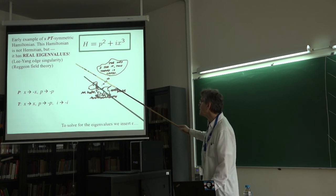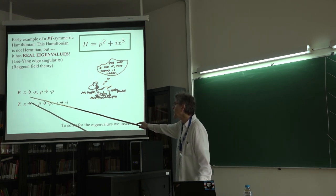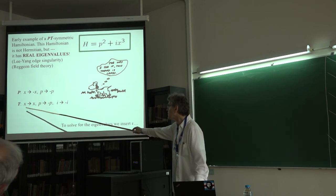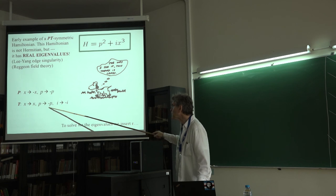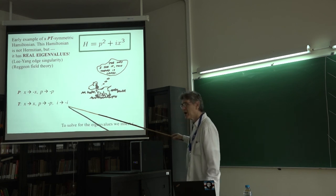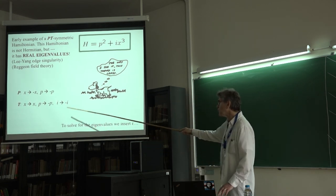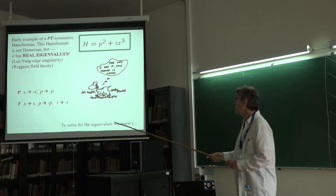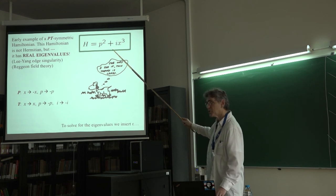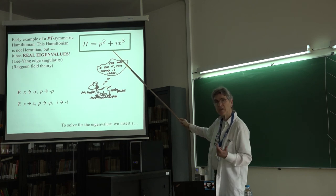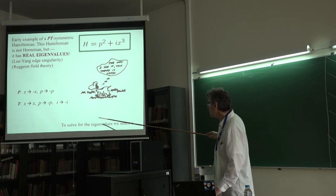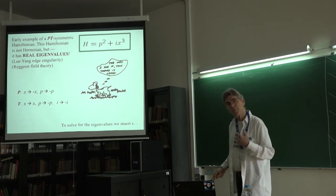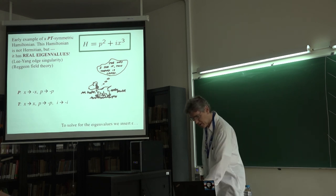Under parity P, x goes to minus x and p goes to minus p. Under time reversal, x goes to x but p goes to minus p, and also i goes to minus i — so time reversal is a nonlinear operator. If you wanted to solve this Hamiltonian using the technique I described, you insert an epsilon in the exponent measuring how nonlinear the problem is. You begin with the harmonic oscillator and put in a factor of ix to the epsilon.